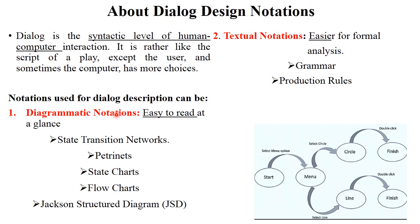The notations used for dialogue description have two types. First, diagrammatic notation — it is easy to read at a glance. Types of diagrammatic notation include state transition networks, Petri nets, state charts, flowcharts, and JSD. The second type is textual notation, which is easier for formal analysis. Grammar and production rules are examples of textual notation. This concept is called dialogue design notations.